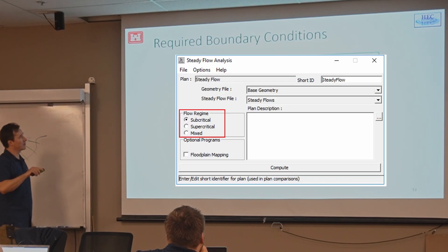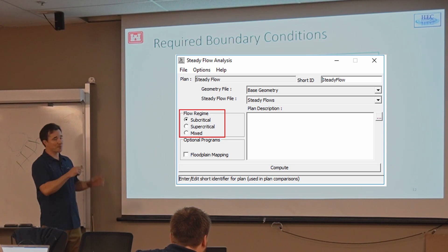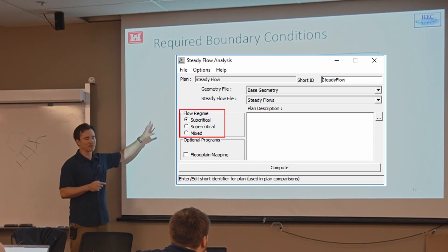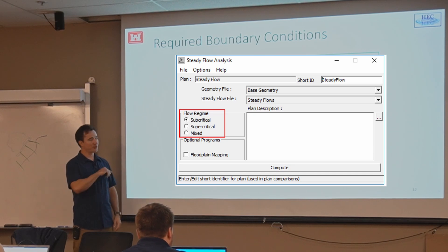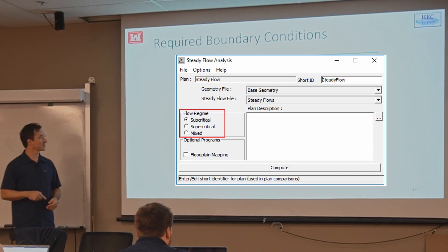This is the steady flow analysis editor, which you can get to from the main window by clicking on the icon that looks like this guy, this running person on a flat bed. And this is where you select your flow regime. You have to know this ahead of time before you start running and before you enter your boundary conditions and all that because it's going to determine how you enter your boundary conditions. So that's one of the first things you need to think about and do in RAS.